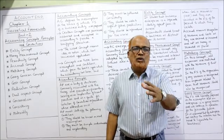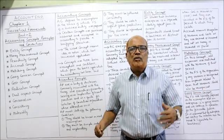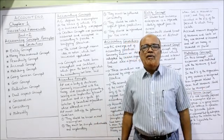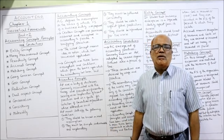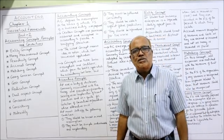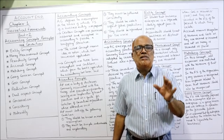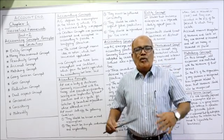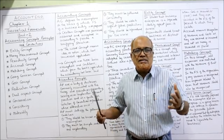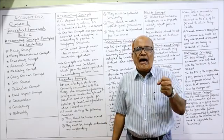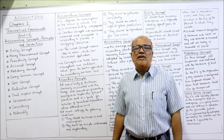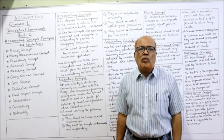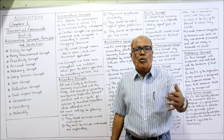If we give the task of finding out the profit to different accountants, they will find it in their own way without following any rules. Accounting is a science which consists of rules and regulations that every accountant must follow, so we can have consistency and reliability in the accounts.